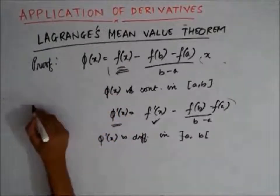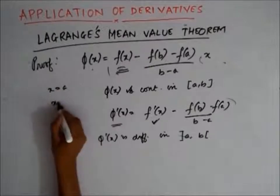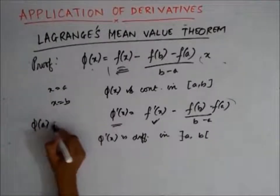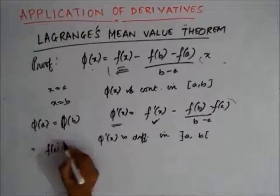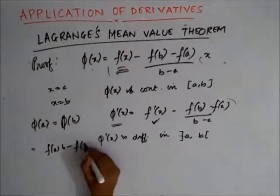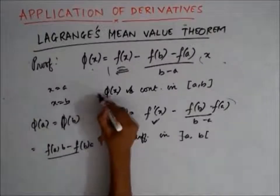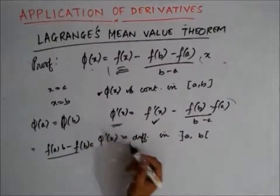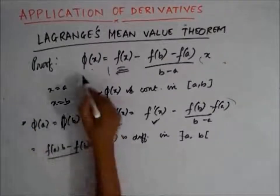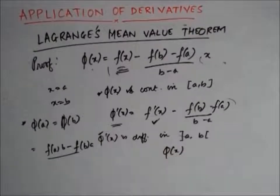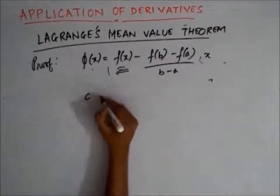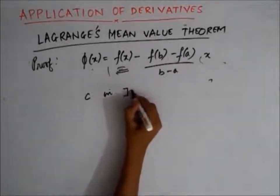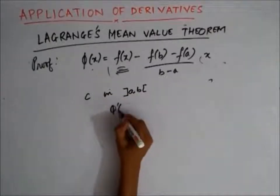Also, if you put x equals a and x equals b, you will find that φ(a) is equal to φ(b). So this is the first condition of Rolle's theorem, this is the second condition of Rolle's theorem, and this is the third condition of Rolle's theorem. That means this function φ(x) satisfies all the conditions of Rolle's theorem. So if this function satisfies the conditions of Rolle's theorem, that means there lies a value of c in (a, b) such that φ'(c) equals 0.